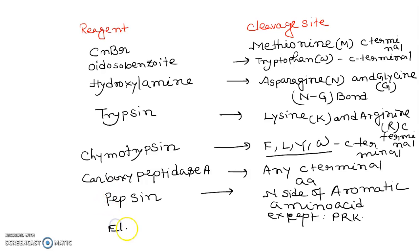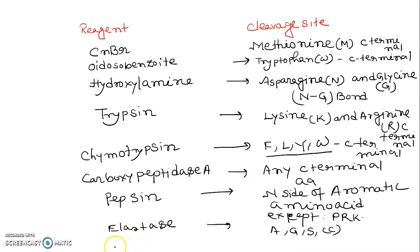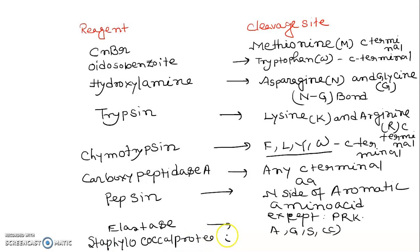Elastase cuts at the C-terminal side of alanine, glycine, and serine. Staphylococcal protease cuts at the C-terminal side of aspartic acid and glutamic acid.